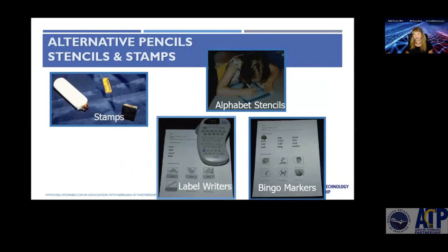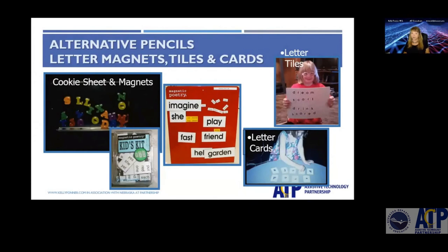You can also look at physical alternatives that go onto paper, such as using a stencil to draw letters, a stamp, or a bingo dauber to mark a report or test. Using different kinds of label writers is another approach — print label writers that go right on. Cookie sheet magnets are useful if you're doing activities with letters that need to be moved around quickly, along with letter tiles or letter cards.